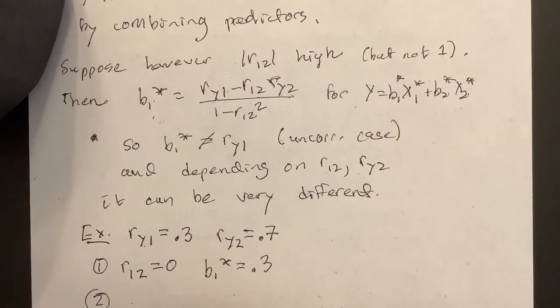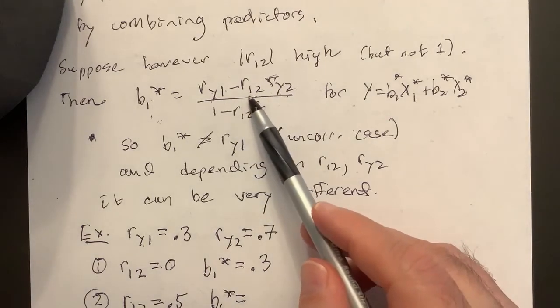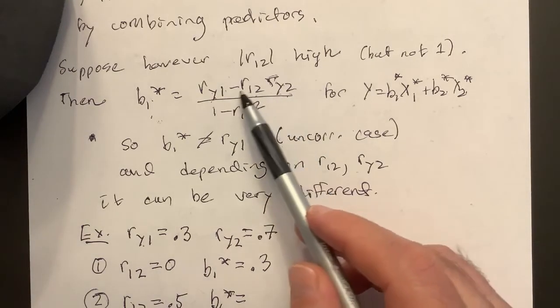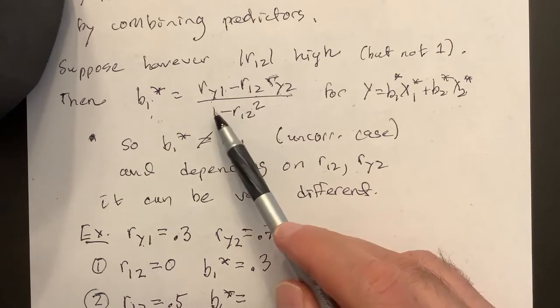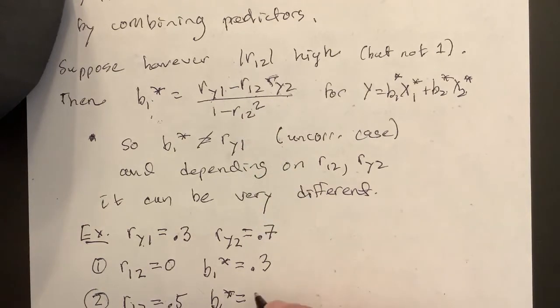So two, suppose I have R12 now equals a half, 0.5, so they're pretty correlated positively, and then I would get B1 star equals, well, if it's a half, then let's see, we have 0.3 minus 0.35, so I get minus 0.05, and then divided by, so that's 1 over 0.75, so I get minus 0.067.